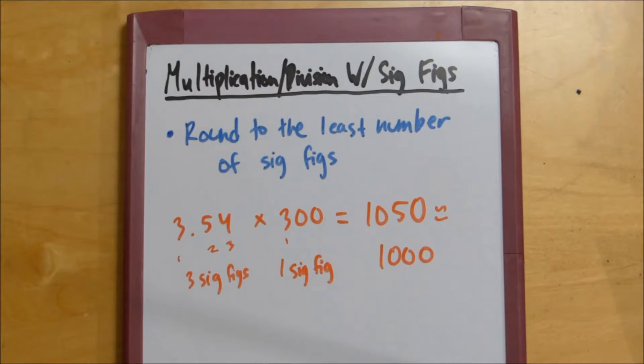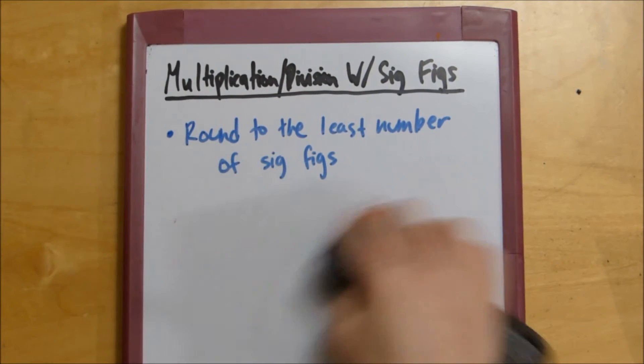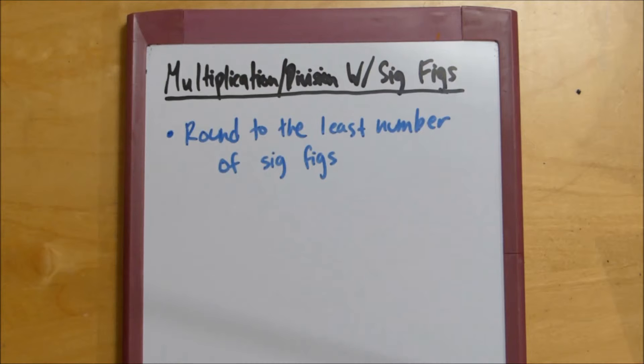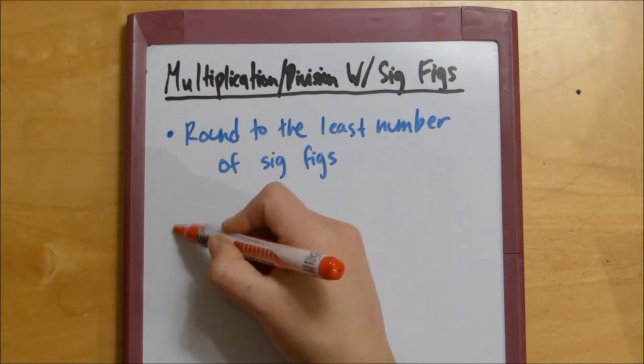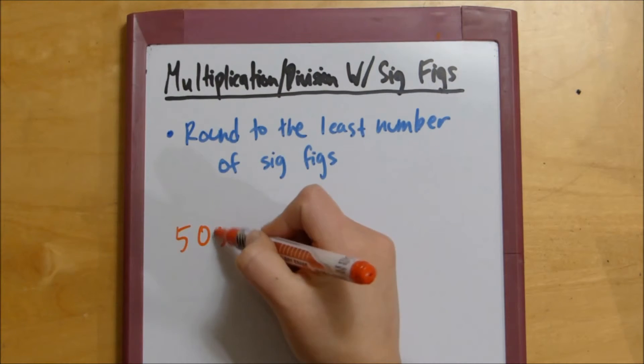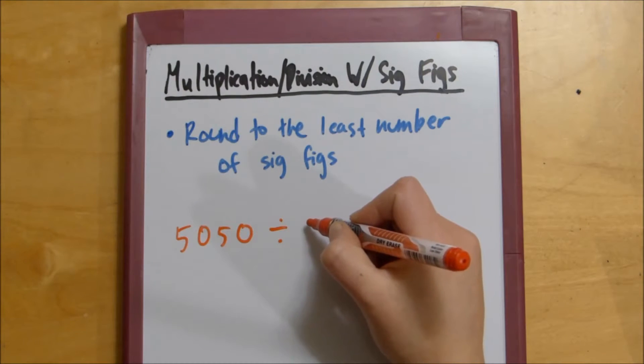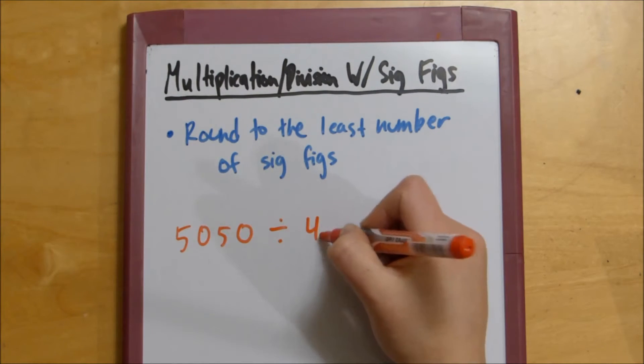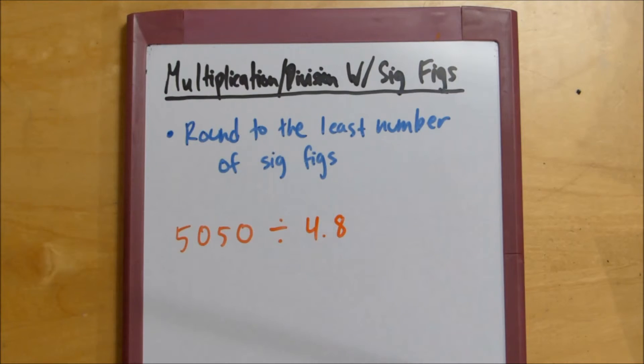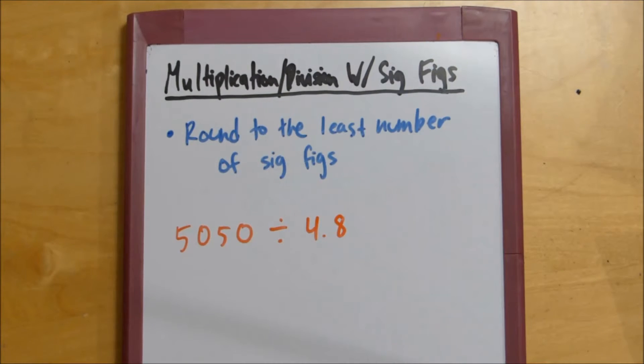We can do the same thing with division. Let's change it up a little bit. Let's say we have something like 5050 divided by 4.8. So, let's count off the sig figs.